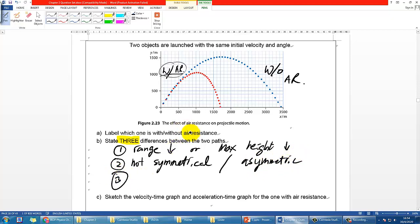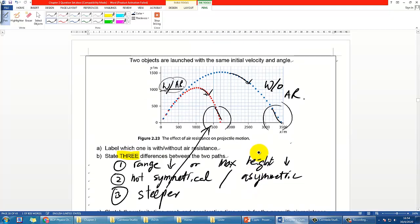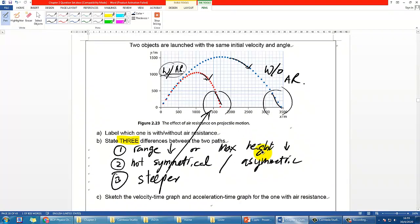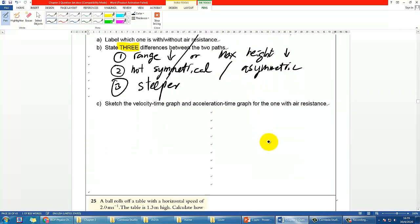The last difference that you may have is when the particle is coming back down, right here you can find the angle that it is having is steeper. So at this point it is steeper. These are the main three differences you may realize with or without air resistance.